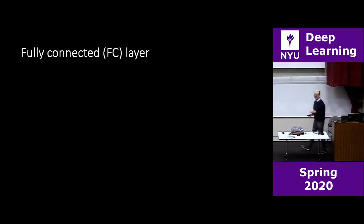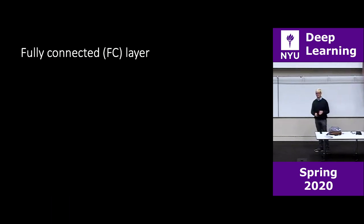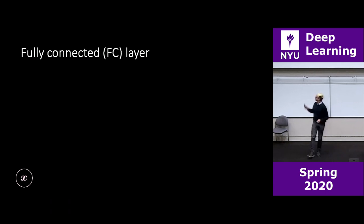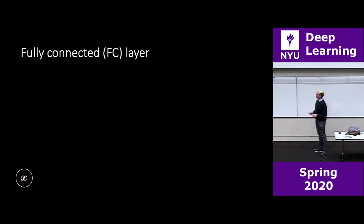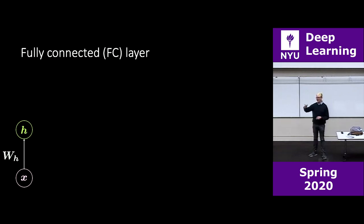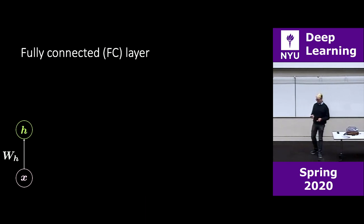We've already seen fully connected layers, so I'll go quickly. You have your input x, then a rotation (which I call weights), then a squashing (non-linearity), then the hidden layer, then another rotation and a final squashing — or possibly a linear transformation if you're doing regression. Any of those non-linear functions or even a linear function can be used depending on the task.